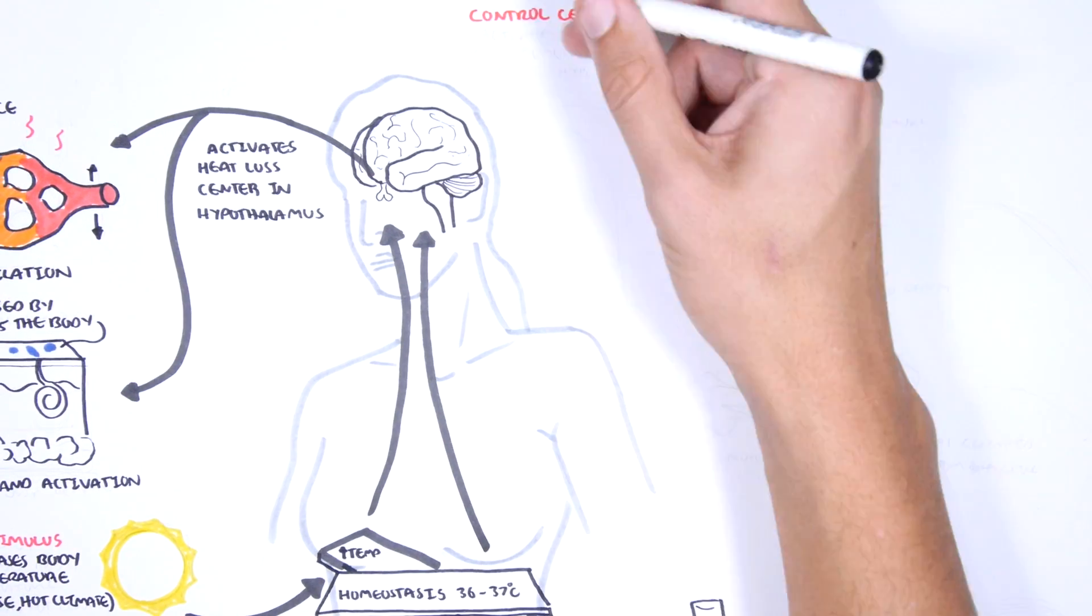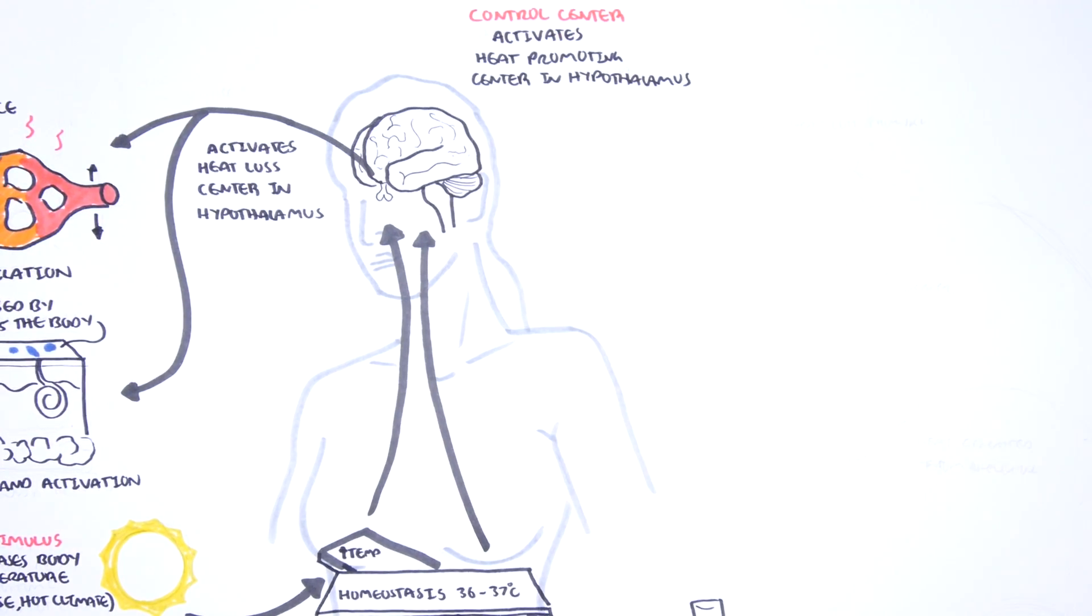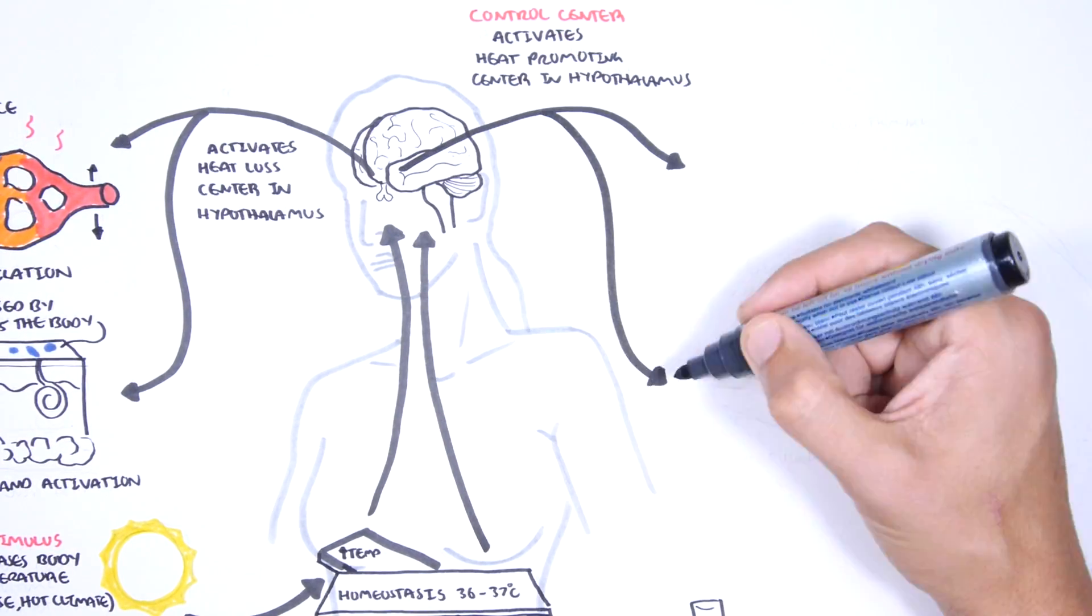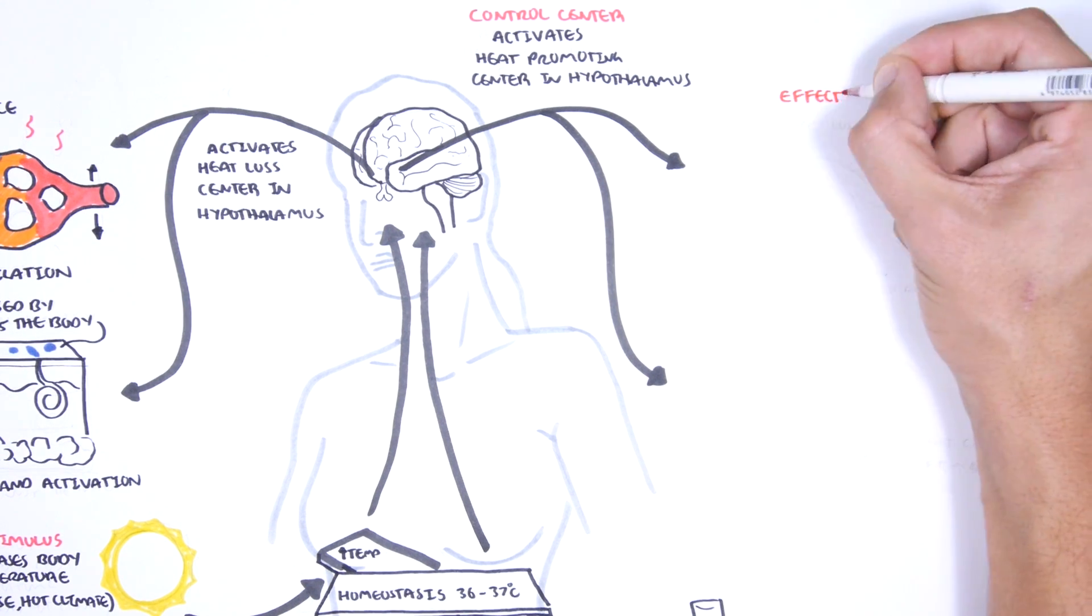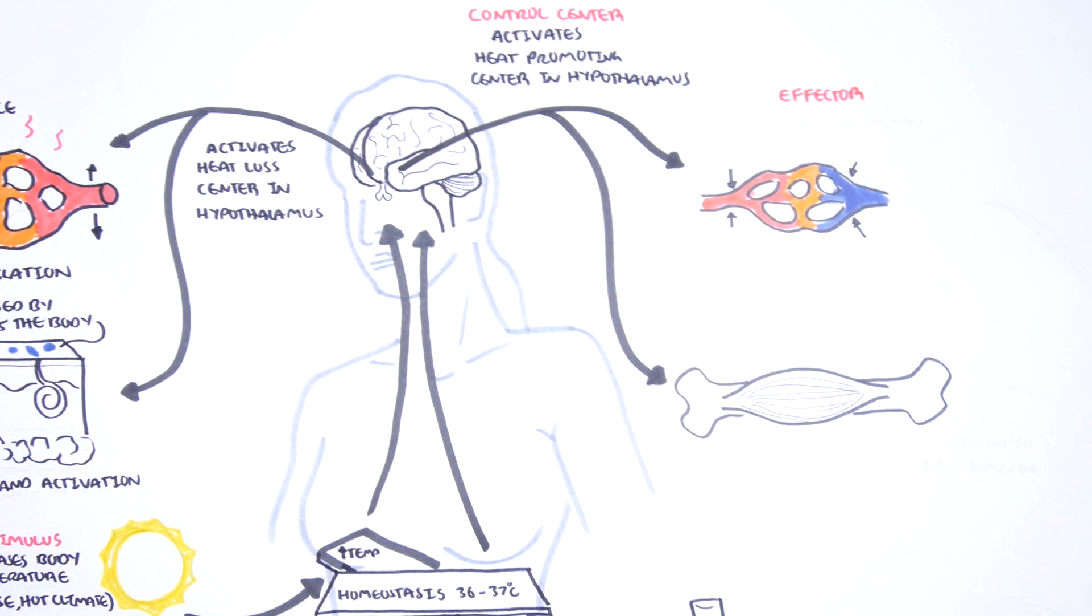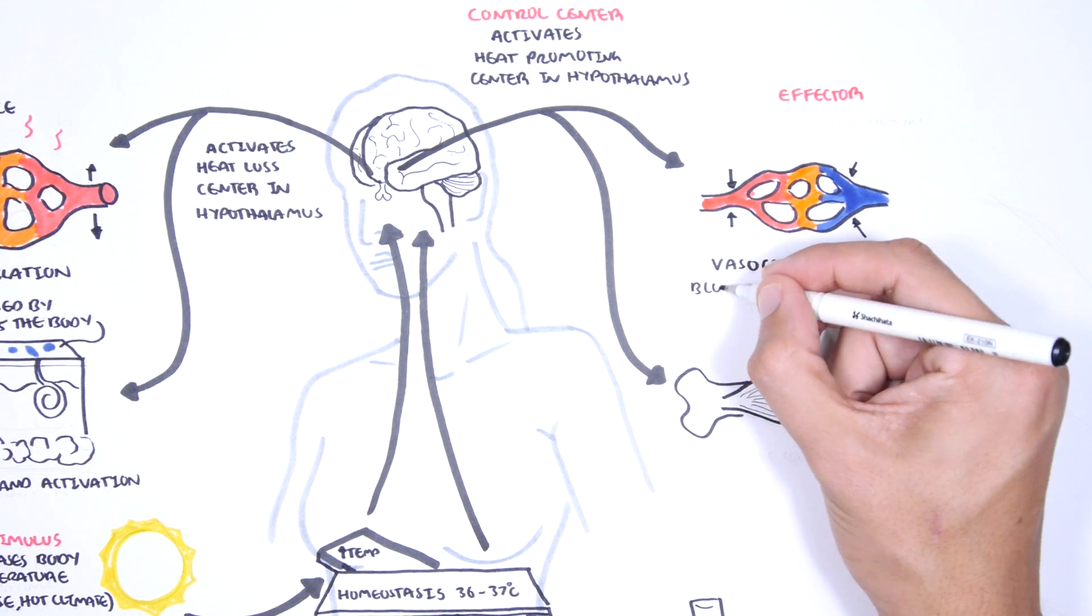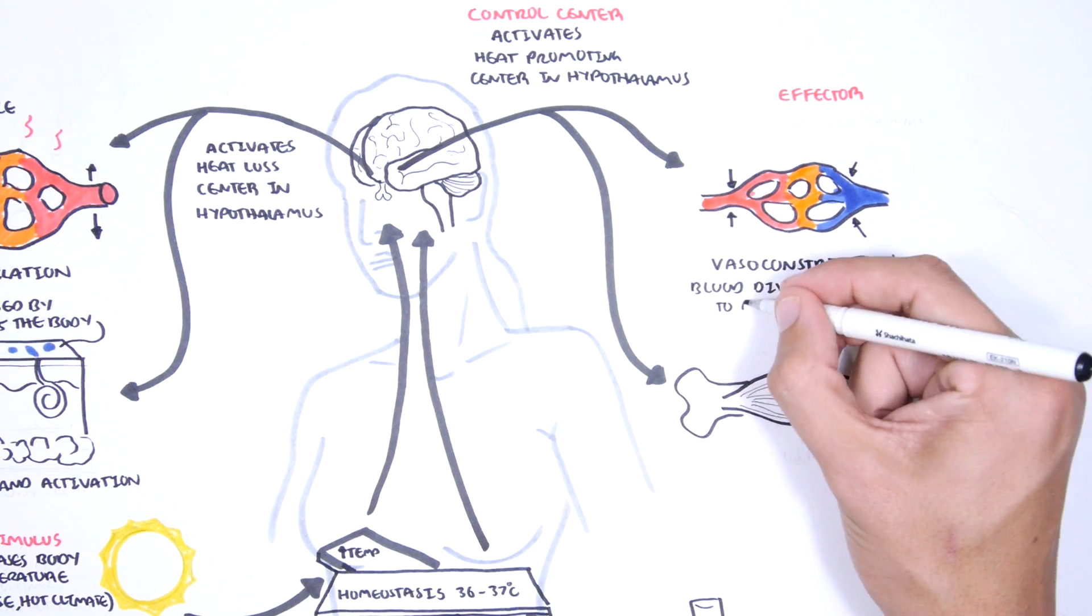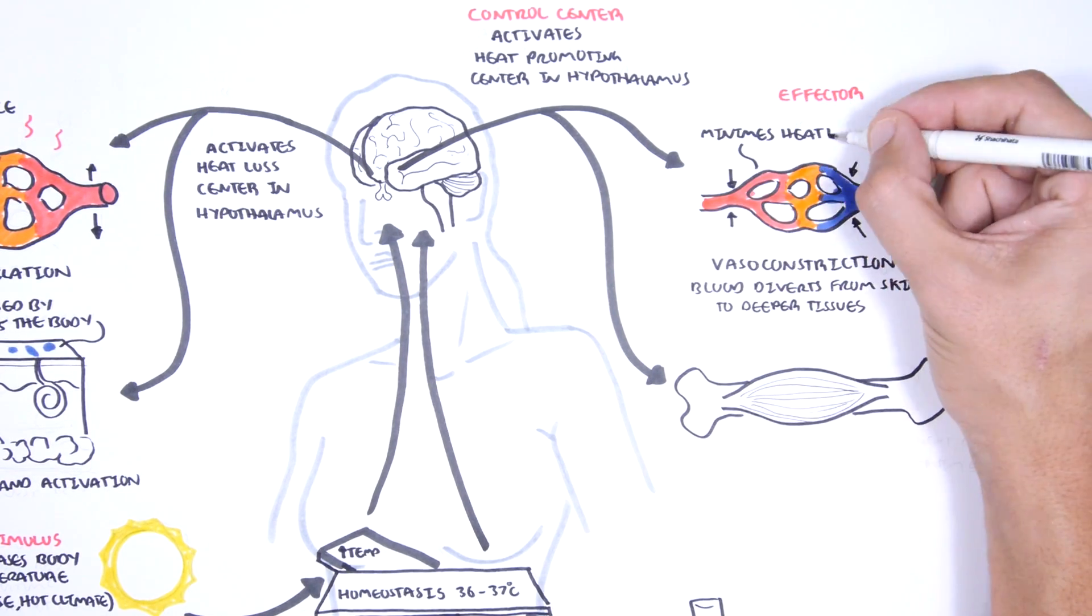The brain, which is the control center, activates heat conserving mechanisms. The first to be activated is vasoconstriction, a narrowing of the blood vessel in the skin, which serves to retain warm blood deeper in your body and minimize heat loss from the skin.